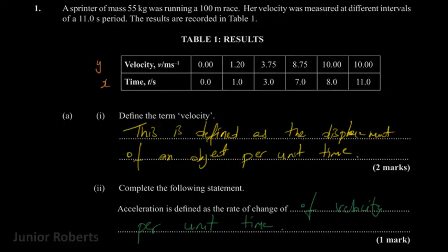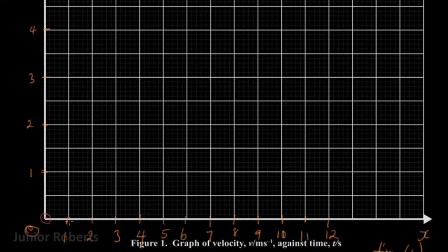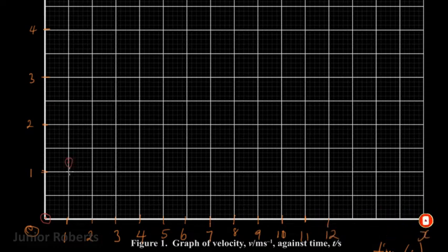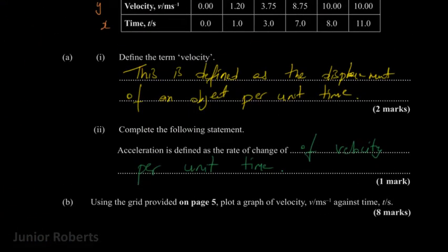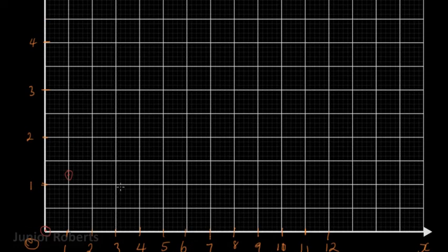The next point is when time is one second and the velocity is 1.2 meters per second. When time is one second we go to 1.2 on the velocity axis — that's between 1.1 and 1.2. The next point is when time is three seconds and the velocity is 3.75 meters per second, which is plotted at approximately that position.